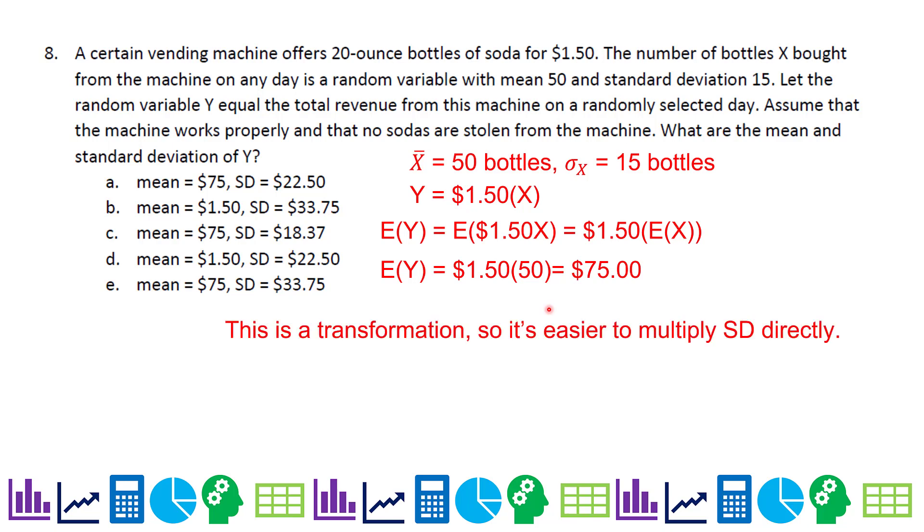My expected value is going to behave very nicely, no matter what kind of situation I'm dealing with here, whether it's transforming or combining. Hopefully you see this is transforming because I'm just taking the variable and manipulating it. I can take $1.50 times the expected value of X, which is 50 bottles, and I expect to get $75 profit. Because this is a transformation, I can avoid working with variance. I can just multiply the standard deviation directly. So I can take that $1.50 and multiply it by the 15 and get $22.50. The exception is add subtract on transformations. You got to remember to ignore that for spread or standard deviation.